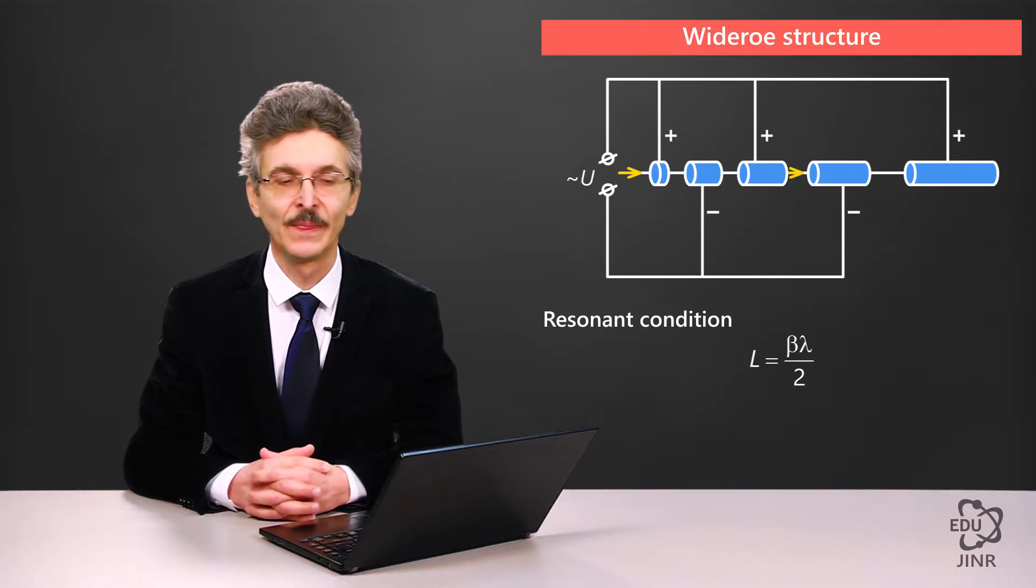Widerow suggested a structure consisting of a sequence of drift tubes. A drift tube is a metal cylinder with no electric field inside it. The electric field is concentrated in the gaps between the neighboring drift tubes.